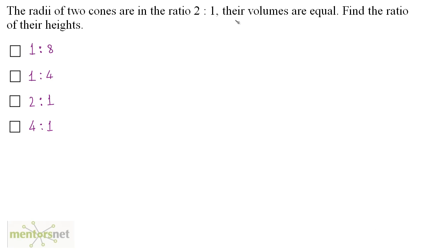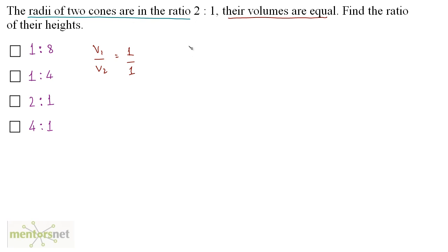Since the volumes of the two cones are equal, the ratio of the volumes is 1 to 1, so v1 by v2 is equal to 1 by 1. We have been given the ratio of the radii: r1 by r2 is equal to 2 by 1. And we have to find the ratio of their heights, h1 by h2.